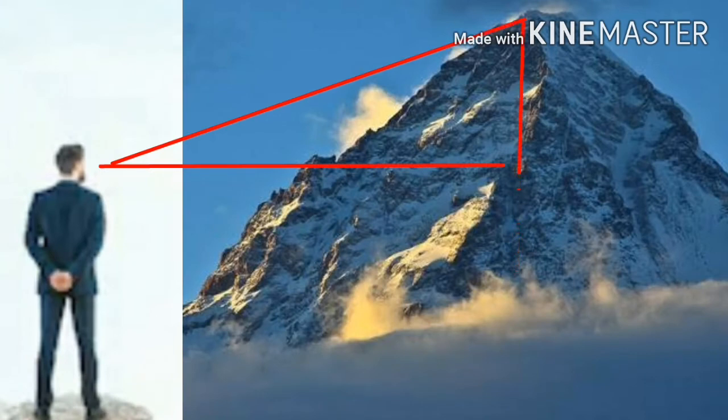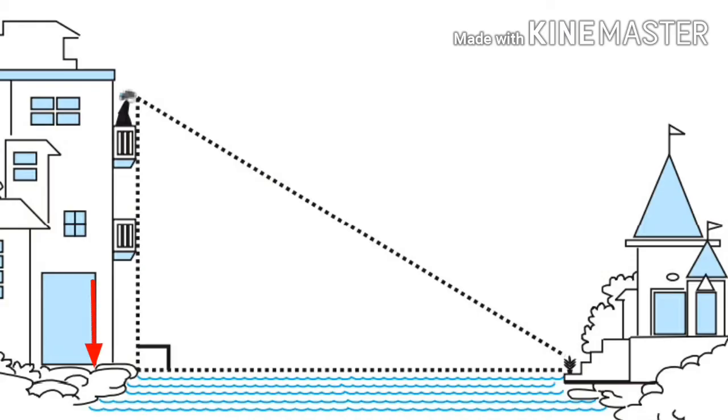Here, a man is seeing a mountain at a long distance. If you know the angle of elevation and also the distance between the man and the mountain, we can find the height of the mountain without measuring.